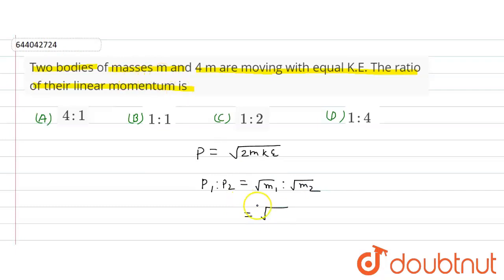So now here, in the first case mass is m and in the second is 4m, so this will be how much? 1 to 2. This is the ratio of momentum.